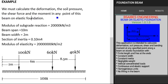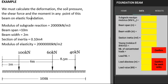the shear force and the moment in any point of this beam on elastic foundation. With these data: Subgrade reaction modulus is equal to 20,000 kN per meter cubed.